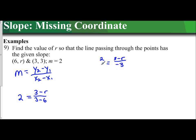When I see this I can actually set up cross multiplication and solve for r. So 2 times negative 3 is negative 6, and 1 times 3 minus r is 3 minus r. So 3 minus r equals negative 6. Subtract 3, negative r equals negative 9, and then divide by negative 1. r is 9.